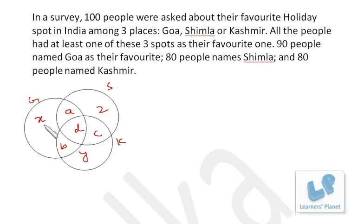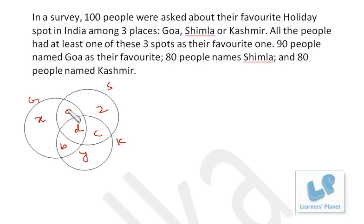I've named the regions x, y, z, a, b, c, and d. Here x, y, and z are the number of people who chose just one spot as their destination. For example, x is the number of people who liked only Goa. Region a shows the number of people who liked both Goa and Shimla. The total of all three circles should be 100.